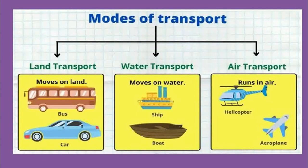The vehicles which move on land are called land transport. Vehicles which move on water are called water transport. And vehicles which run in the air are called air transport.